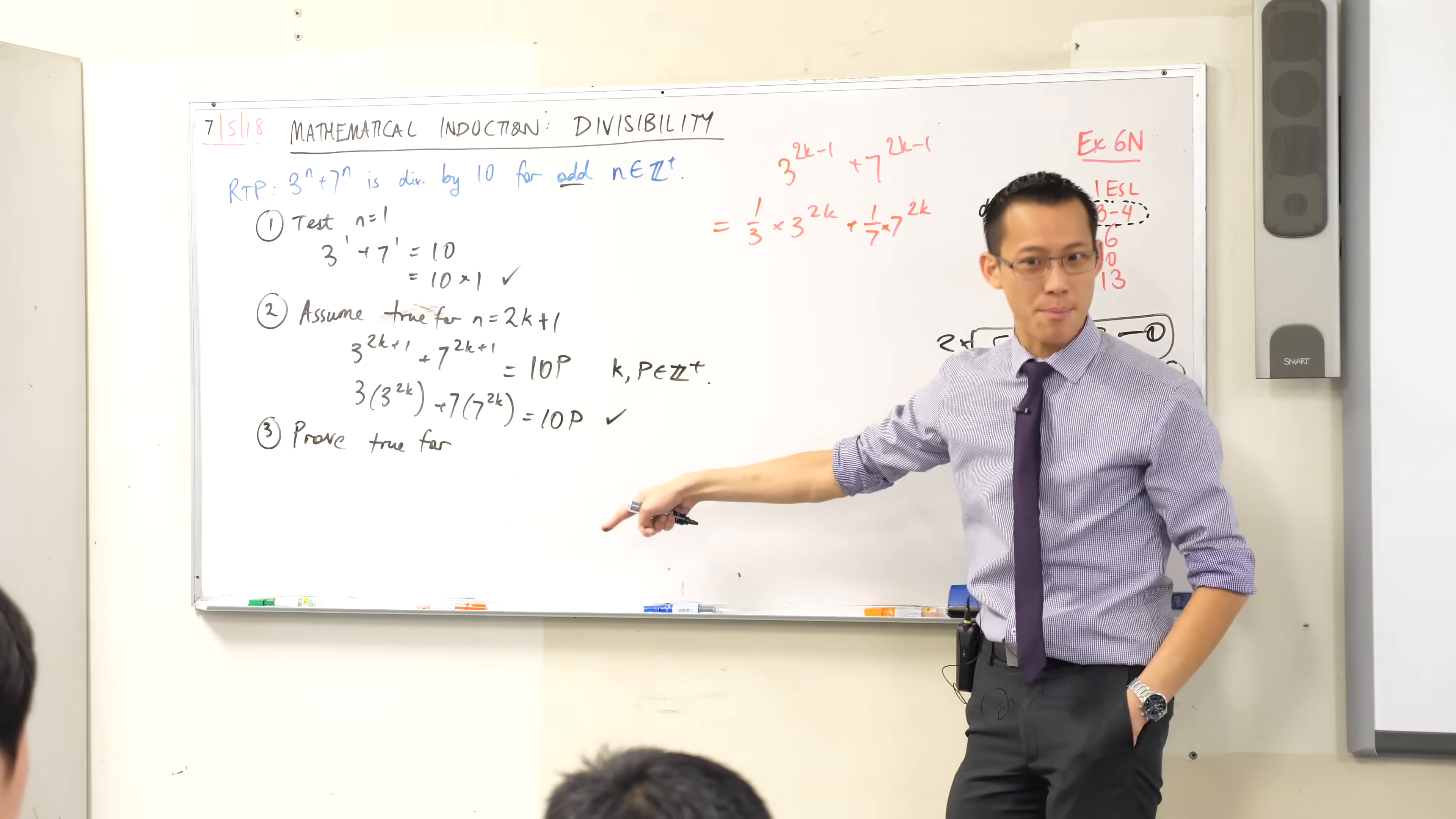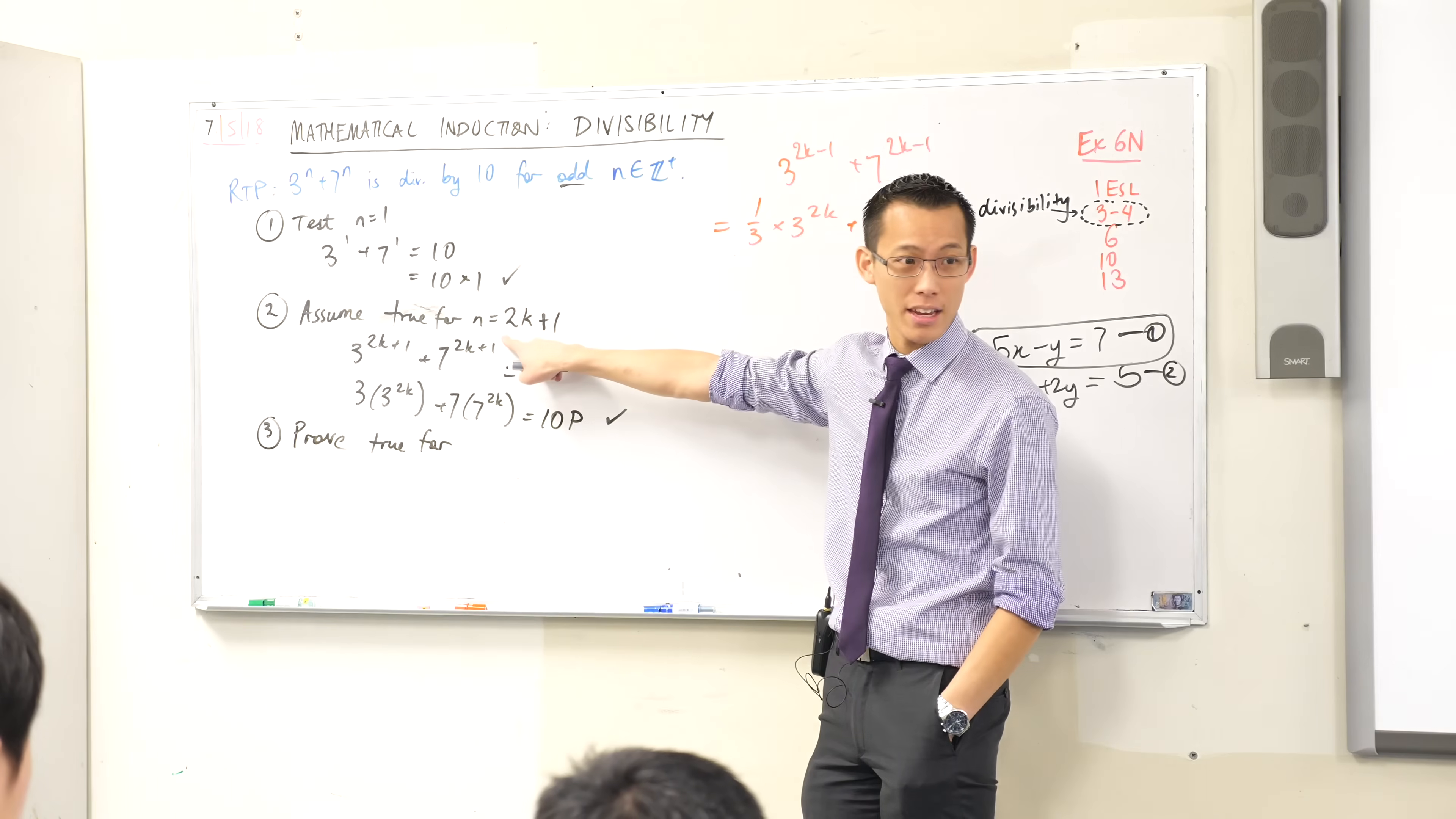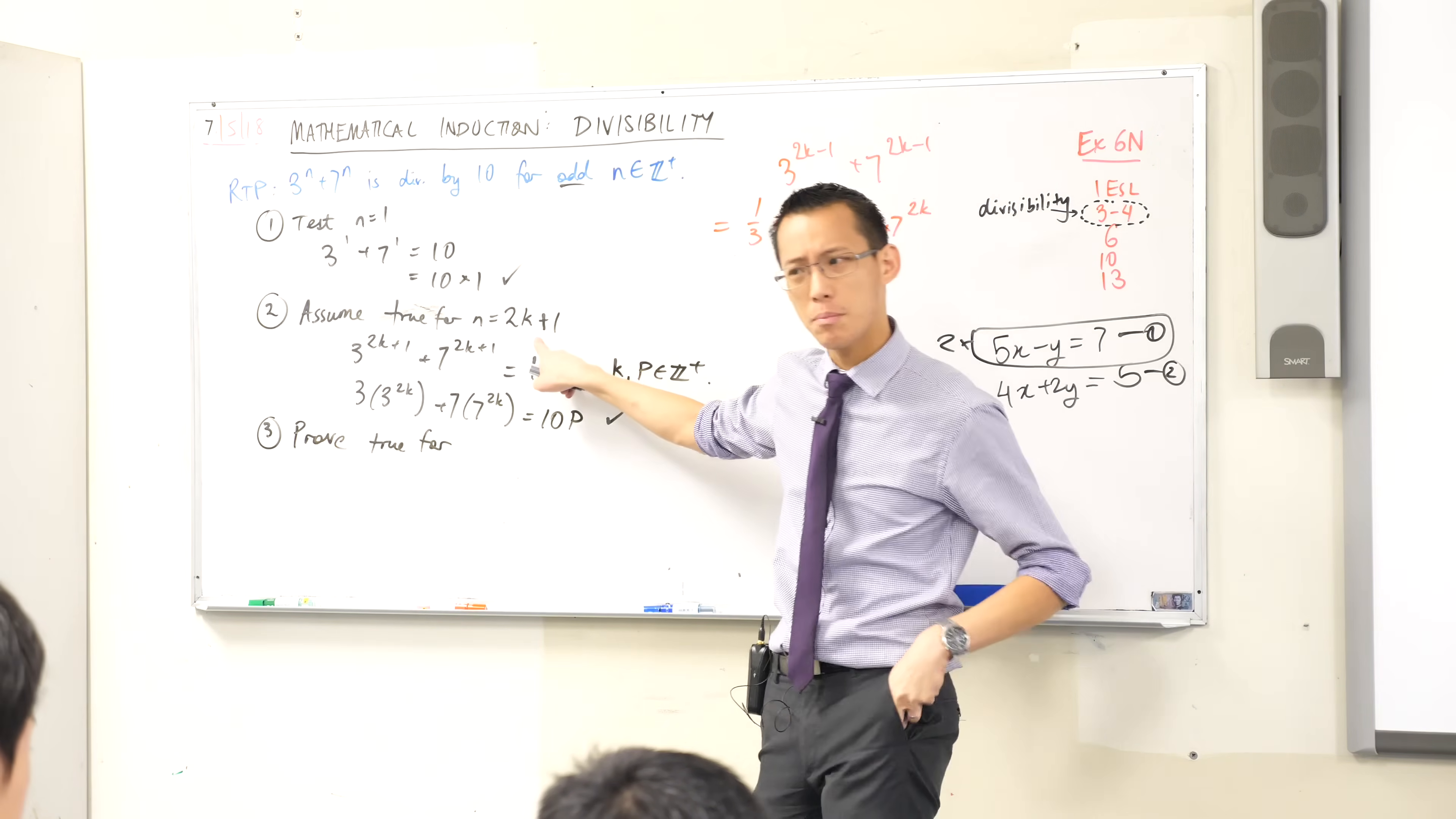The next step, the next rung in the ladder is not going to be k plus 1, is it? Because this is not k. Is it going to be 2k plus 2? That's the next number after it. Why won't it be 2k plus 2?